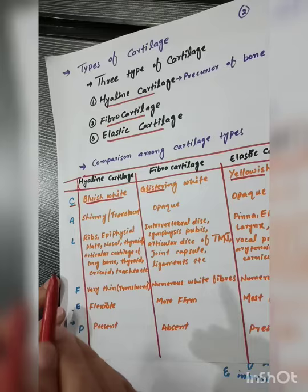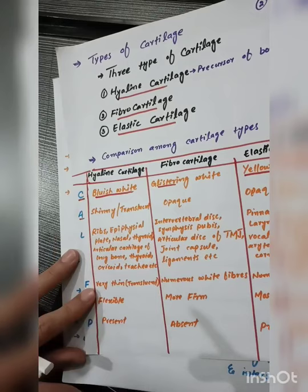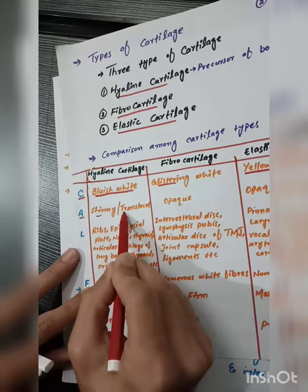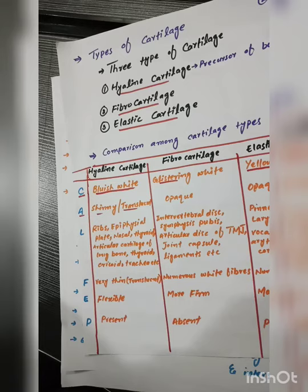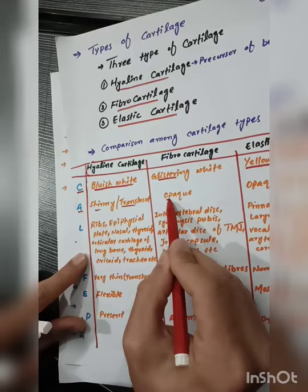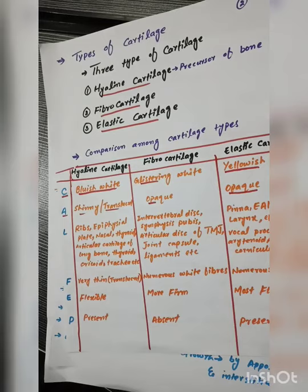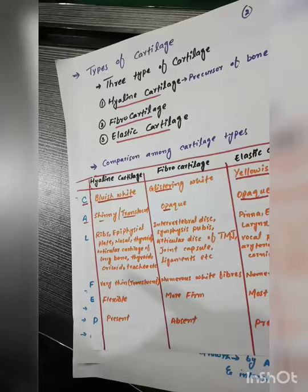The second comparison is based on appearance. Hyaline cartilage is shiny or translucent — translucent meaning like glass. The appearance of fibrocartilage is opaque, while hyaline cartilage allows light through and is translucent.